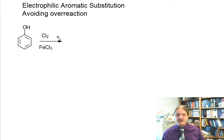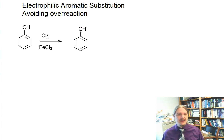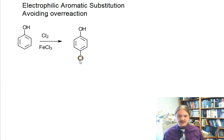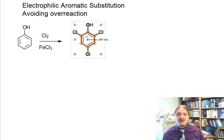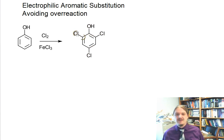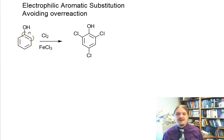In an earlier video I shared one possible consequence for some highly activated systems: even after the first reaction, even though chlorine is a weak deactivator, the ring is still active enough that the major product in fact has chlorines at the para position and both ortho positions, because the OH group in phenol is such a strong activator.